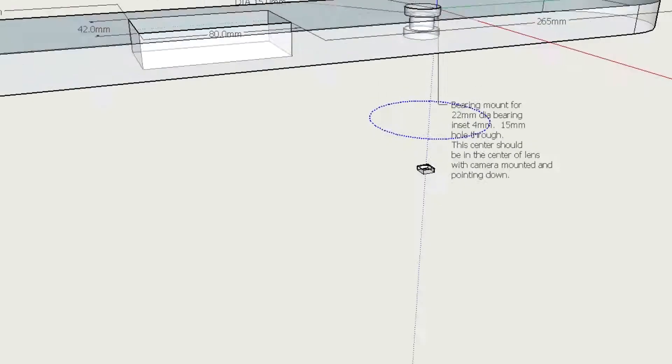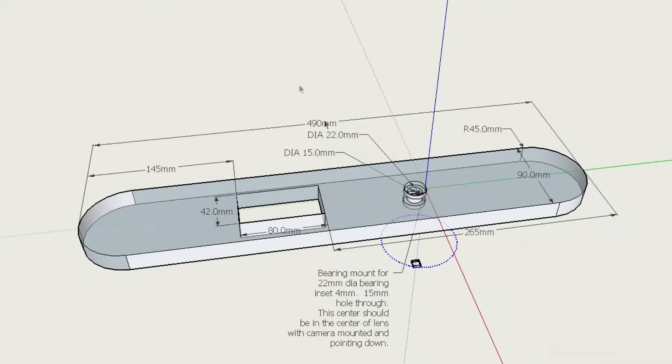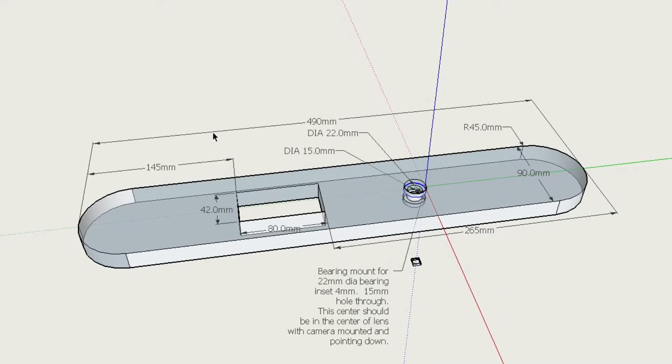The horizontal support still uses the same skateboard bearings mounted similarly, but is longer and has a rectangular hole to accommodate the stepper motor.